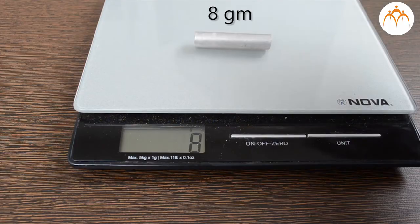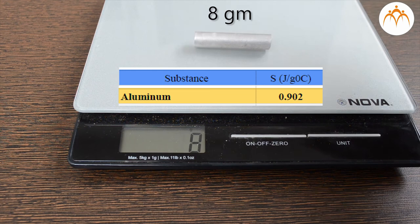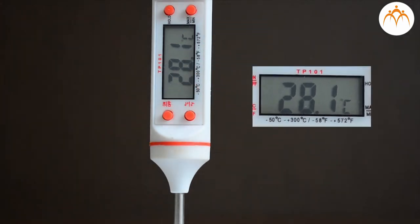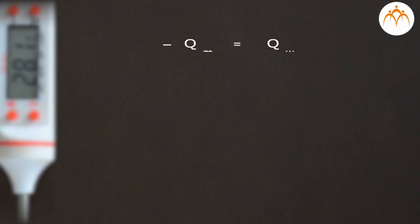Mass of aluminum is 8 grams. Its specific heat is 0.902 joules per gram degree Celsius. Final temperature of the aluminum rod is 28.1 degrees Celsius. From the equation, we can calculate its initial temperature.